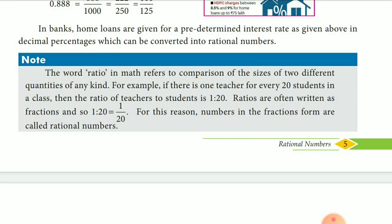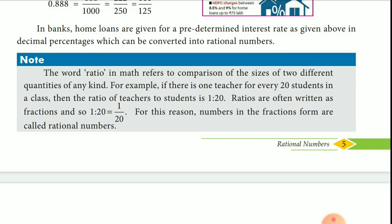Next, why is it said to be a rational number? The word ratio in math refers to comparison of two quantities. For example, one teacher for every 20 students can be represented as 1 is to 20 and can be written in rational form as 1 by 20. That's why numbers in fraction form are called rational numbers.